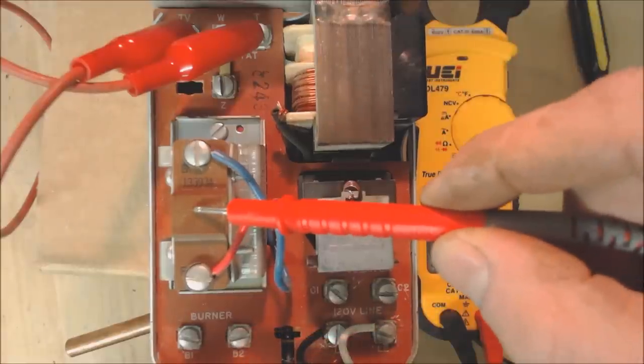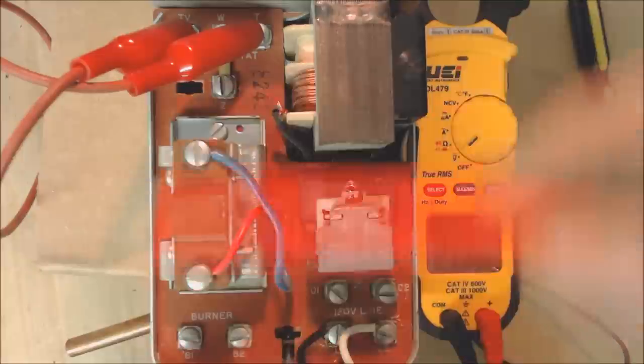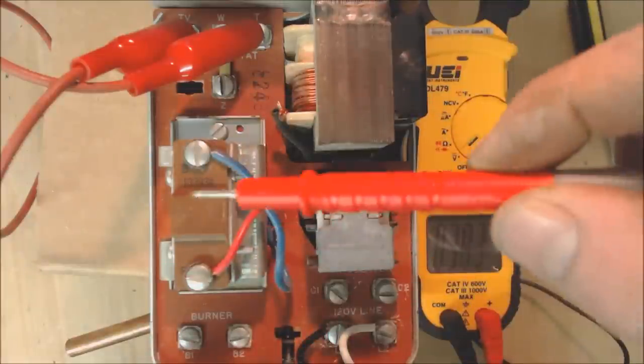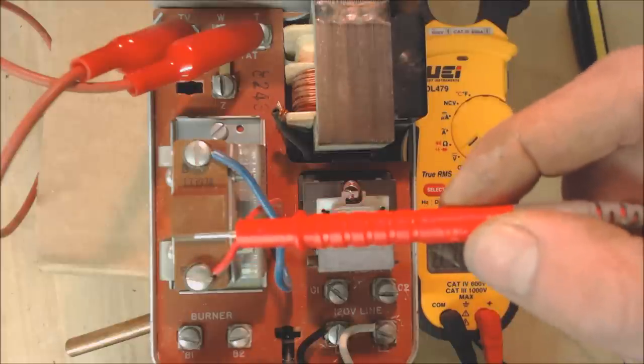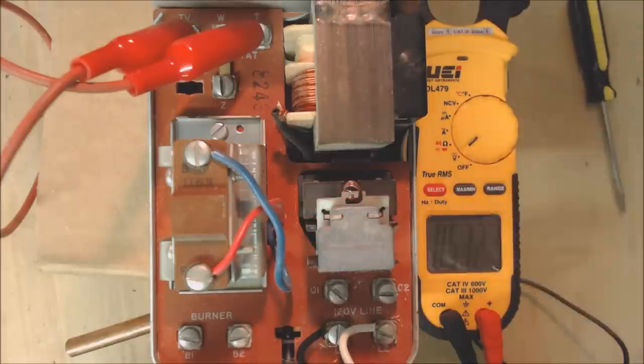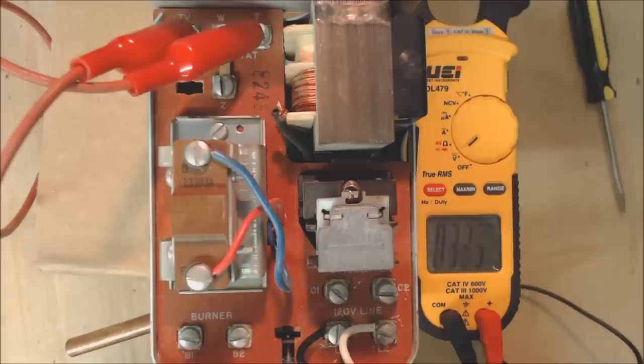This is the safety device to make sure that the burner does not continue to run and run. We want to try to get this temperature of the water up to whatever we have set, like 180 degrees for hot water baseboard or 160 degrees for cast iron radiators, whatever.